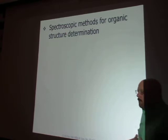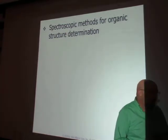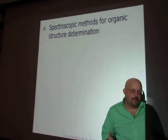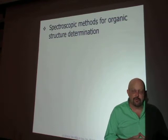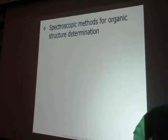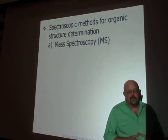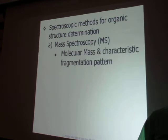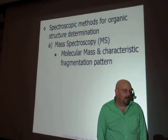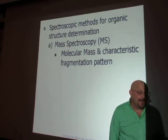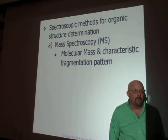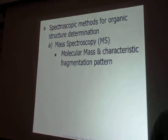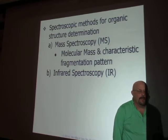When we make a new compound in the organic lab — if we're doing research and make a brand new compound that's never been made before — there are several things we have to do to determine the structure of our unknown compound. One of the things we can do is mass spectroscopy. Mass spec gives us a little bit of information: it tells us some of the fragments of the molecule. You'll know if there was a methyl group or an ethyl group. You can get the molecular weight of your compound. And that's about it from mass spec.